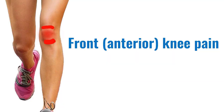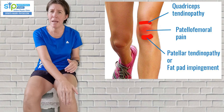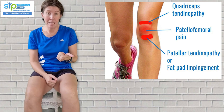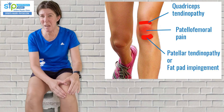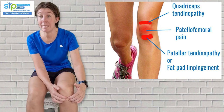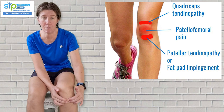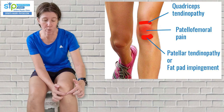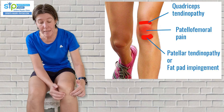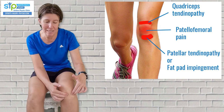Looking at the front of the knee, the most common injuries runners get that give pain over the front of the knee are either patellofemoral pain syndrome — which is basically your kneecap that's hurting — or patella tendinopathy or tendonitis, which is the tendon that runs from the kneecap to the shin bone, or you can get fat pad impingement, which is the fat pad underneath the tendon.